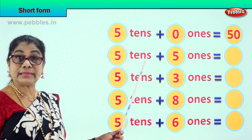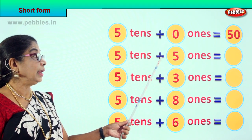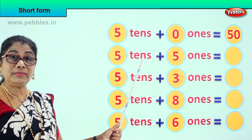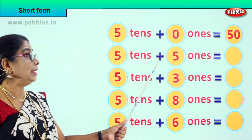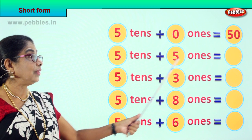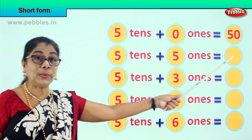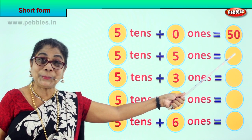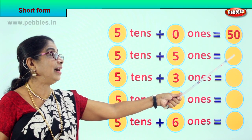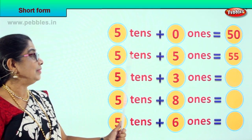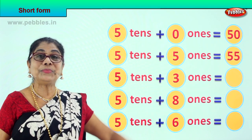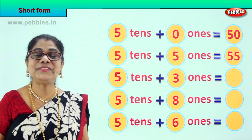5 tenths plus 5 ones. 5 tenths is 50, plus 5. 5 tenths plus 5 ones is equal to? Good, 55. 5 tenths plus 5 ones equal to? 55.